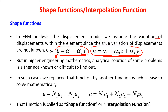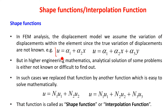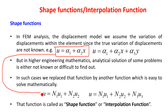For example, when you write down the displacement variation for a two-noded bar element using Pascal triangle, it will be u = α₁ + α₂x. But when you write down the displacement function using shape functions, it becomes u = N₁u₁ + N₂u₂, where N₁ and N₂ are the shape functions and u₁, u₂ are the displacements of node number 1 and node number 2.